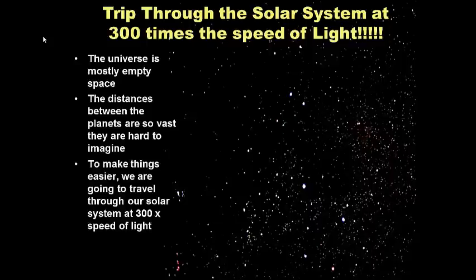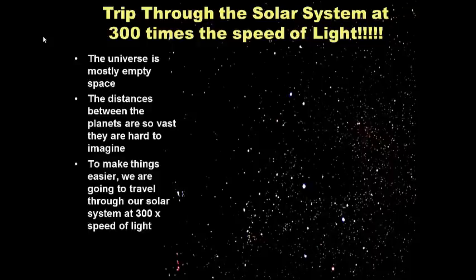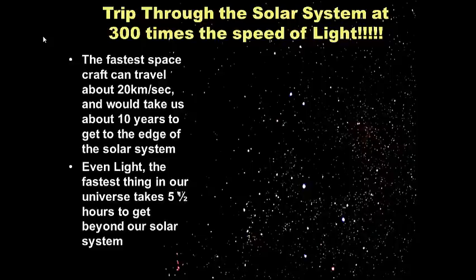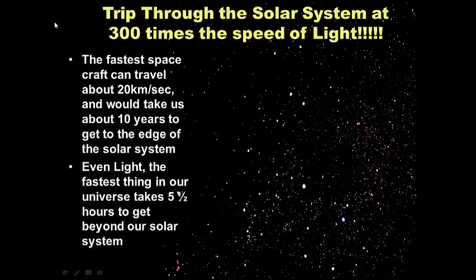Here comes Saturn. Out past Saturn is Uranus, which is way, way out there — and remember, we're traveling at 300 times the speed of light with the planets all lined up. The fastest spacecraft can travel about 20 kilometers per second, and that would take us about 10 years to get to the edge of the solar system. Even light — the fastest thing in our universe — takes five and a half hours to get beyond our solar system. And there's Neptune. The outer planets are really far apart.